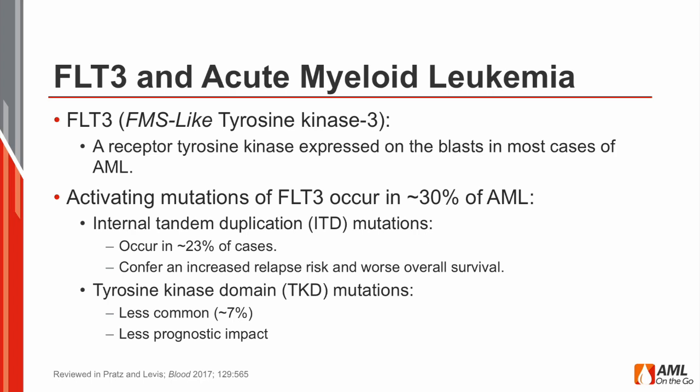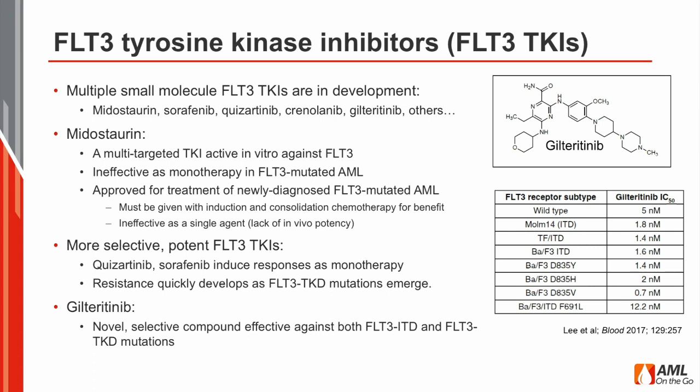These internal tandem duplication mutations — the so-called ITD mutations — confer the worst prognosis. For many years, groups around the world have been trying to develop FLT3 tyrosine kinase inhibitors, and there are a number in development, including midostaurin, sorafenib, quizartinib, crenolanib, gilteritinib, and actually quite a number of others. I'm going to talk mainly about the most dominant ones right now, but there are even more than I've listed here.